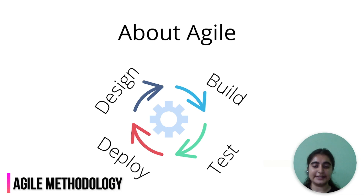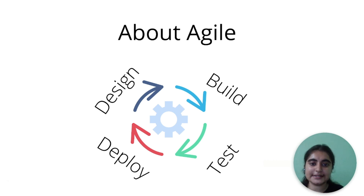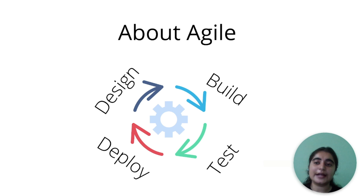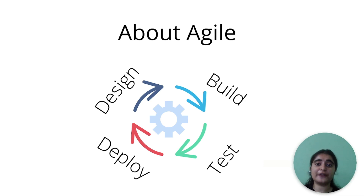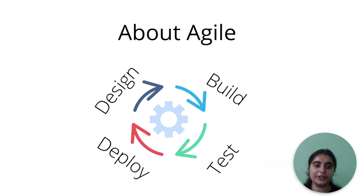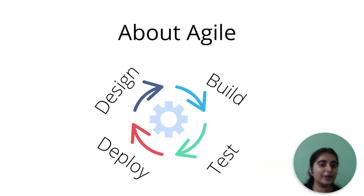Now let's discuss agile methodology. Agile works as a loop: design, build, test, deploy — and then again design, build, test, deploy. Our software applications work similarly. Sometimes you need to update the design of the website, sometimes you need to refactor the whole code. In agile, you can make changes at any step of building software — if you want to change something in the build, you are allowed to do so.